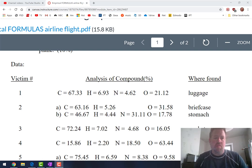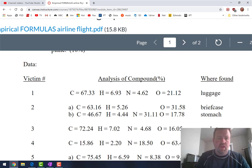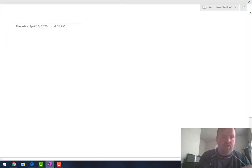So, for question number one of the airplane assignment, we've got carbon 67.33. I'm going to come over here and write, instead of 67.33%, I'm going to write 67.33 grams of carbon.